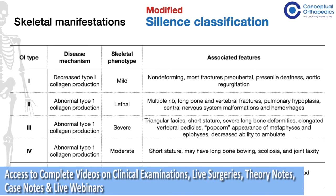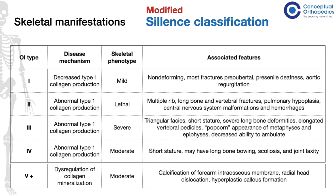In type 5, we can see a calcification of the interosseous membrane of the forearm, a radial head dislocation, and hyperplastic callus formation. All other types — type 5, 6, 7, and so on — form less than 5% of all the children seen with osteogenesis imperfecta.